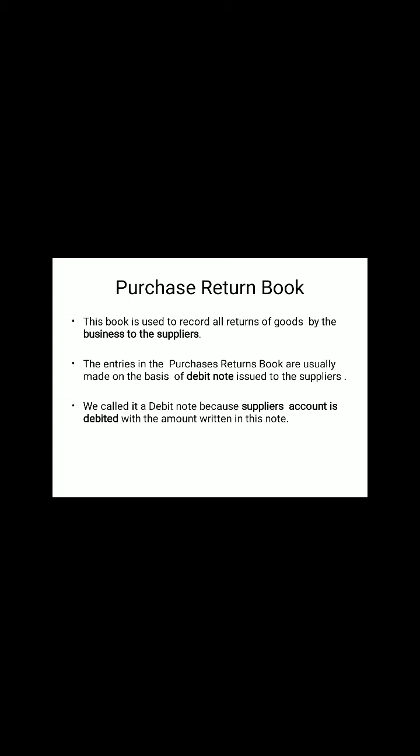Entries for the purchase returns book are made on the basis of a debit note. Debit note means the supplier's account is to be debited — that's why the debit note is used as a source document. The debit note is maintained for returning goods, and the supplier account is debited with the amount written in the note.